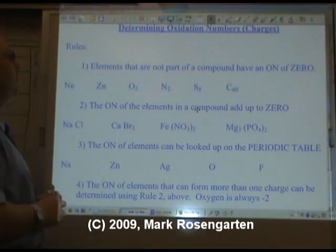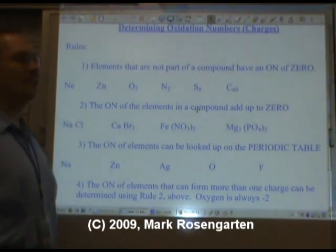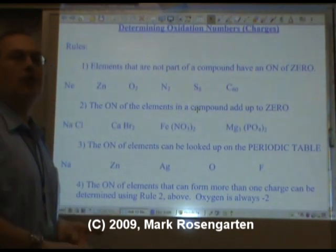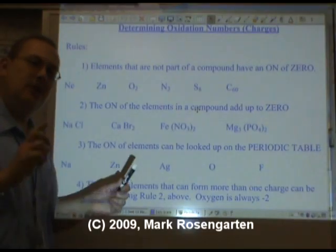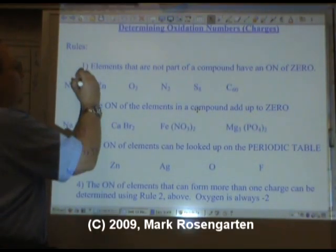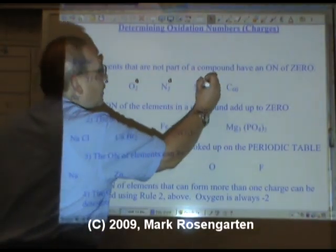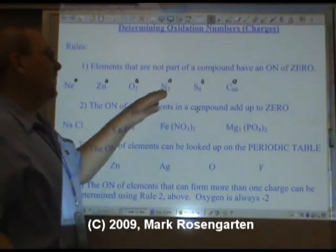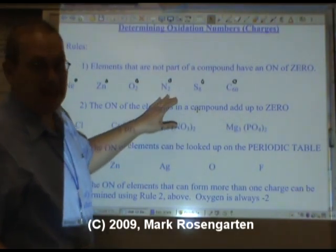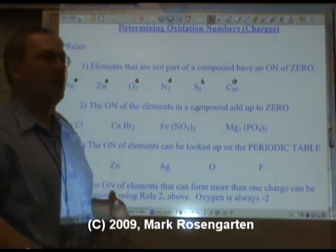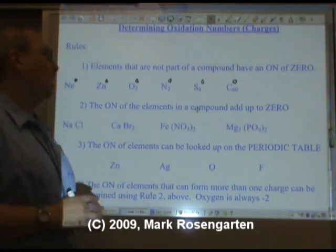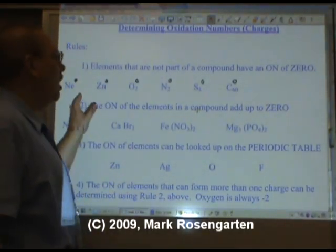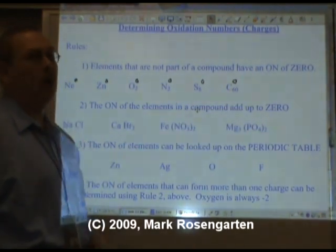Rule number one is very simple. Elements that are not part of a compound have an oxidation number of zero. Why? Because the number of protons equals the number of electrons. No electrons have been lost, no electrons have been gained. If an element is by itself, it has no charge, because if it had a charge it would be in a compound. You can't have something positive without it being bonded to something negative. Therefore, if an element is by itself, it has no charge at all.